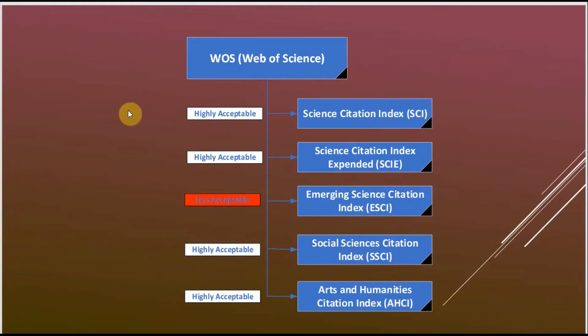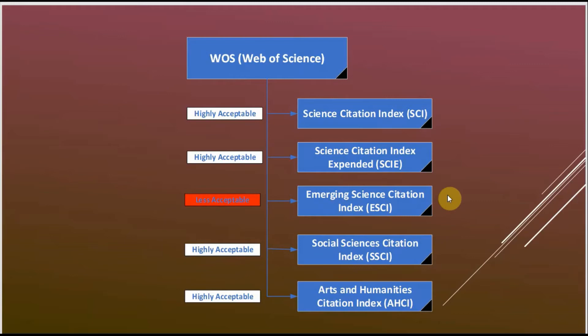After understanding this, I would suggest: do not publish your paper in a journal which belongs to ESCI. Keep in mind — if you publish your paper in ESCI, you can say it is under Web of Science, and yes, it is under Web of Science, but ESCI is a less acceptable journal category.